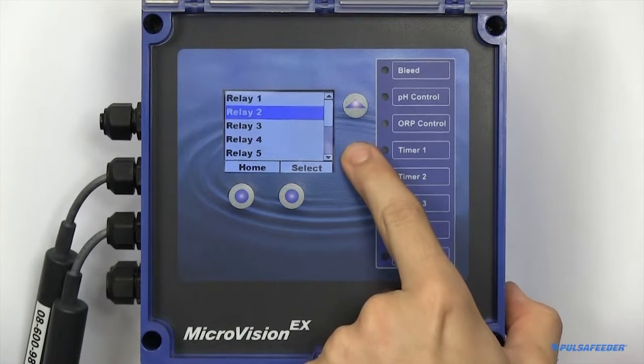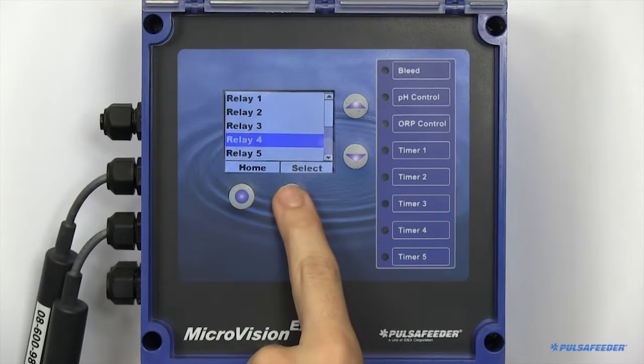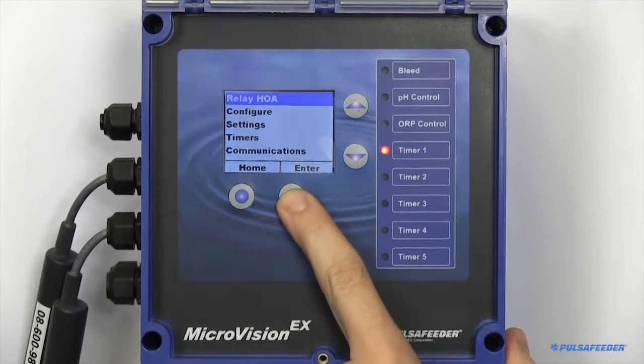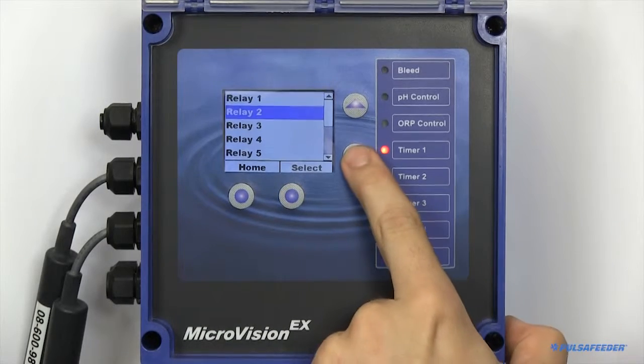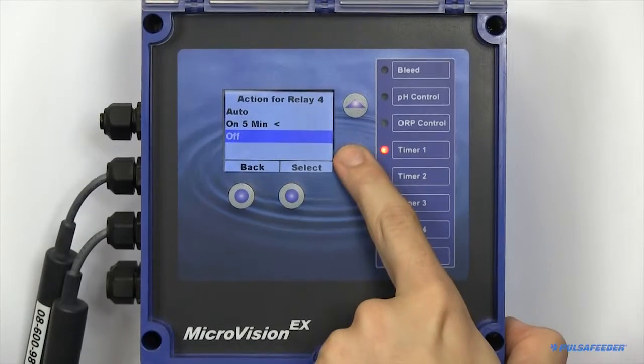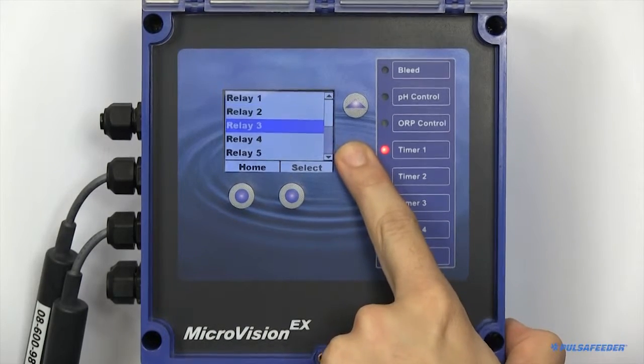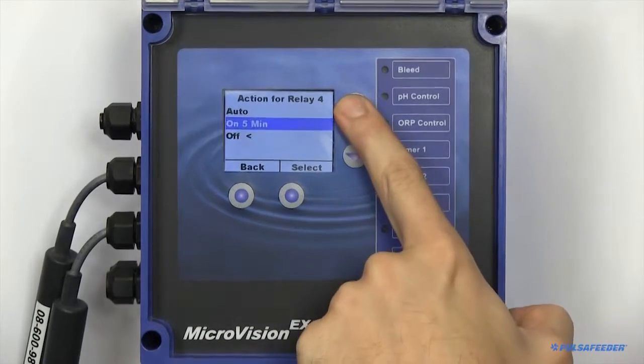You next select the relay you would like to adjust. You can set each relay to either on for 5 minutes, off, or have the relay respond to your normal programming by setting it to auto.